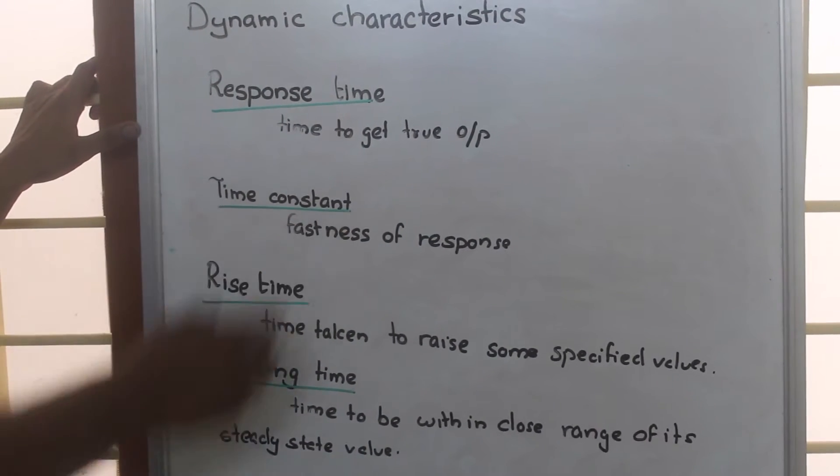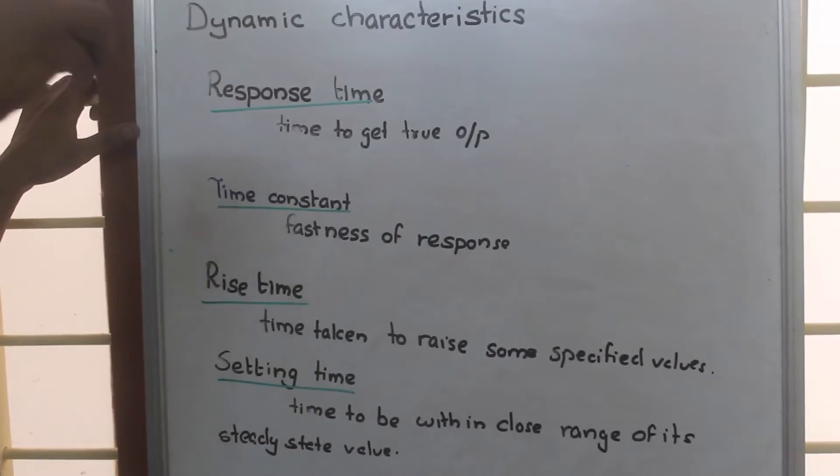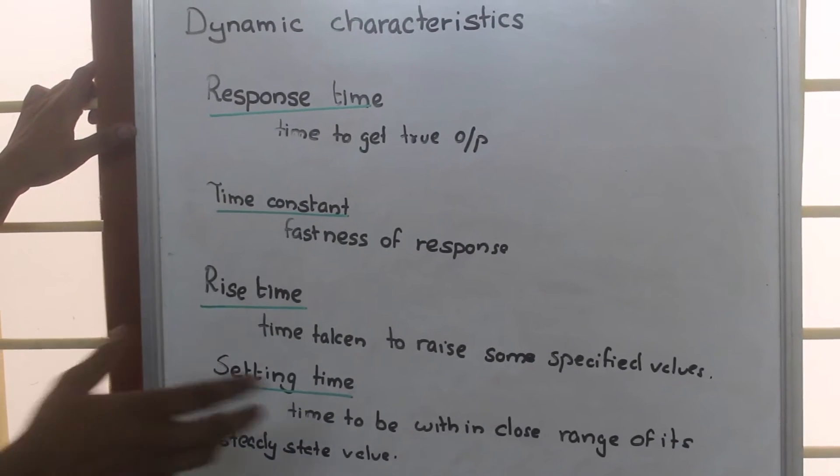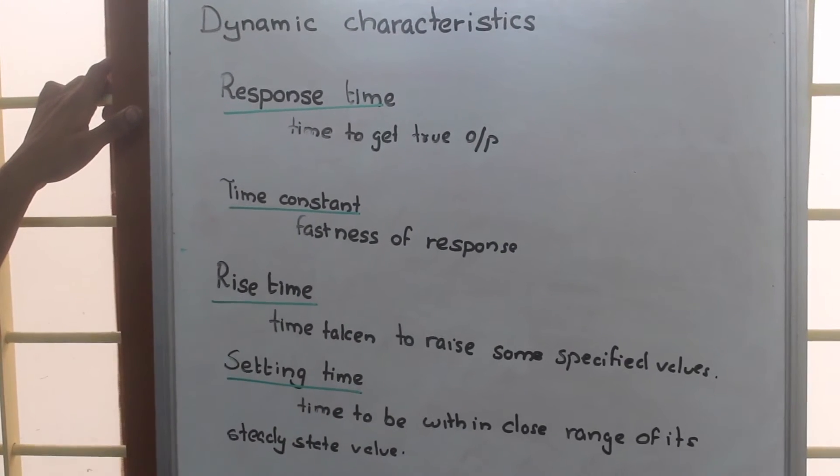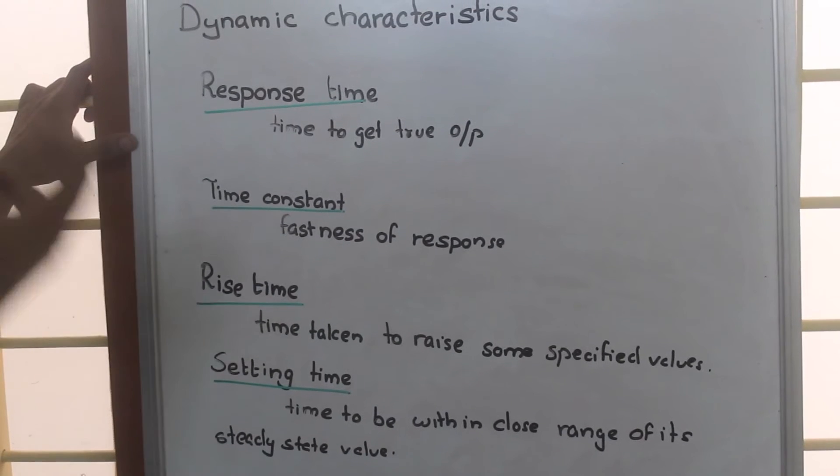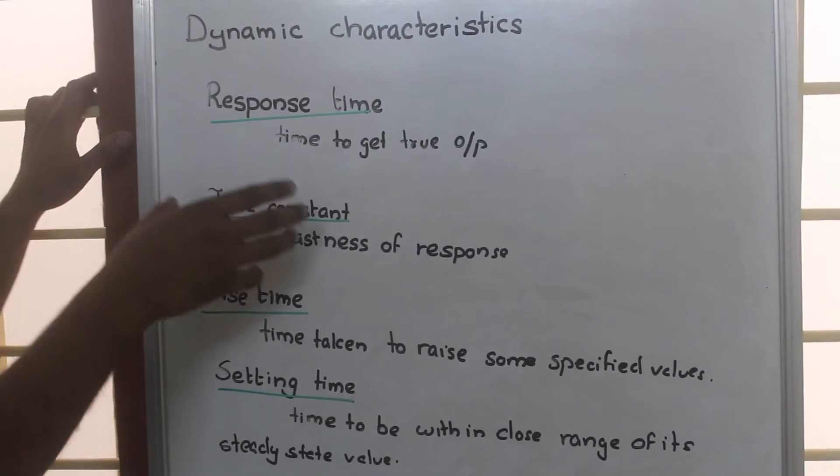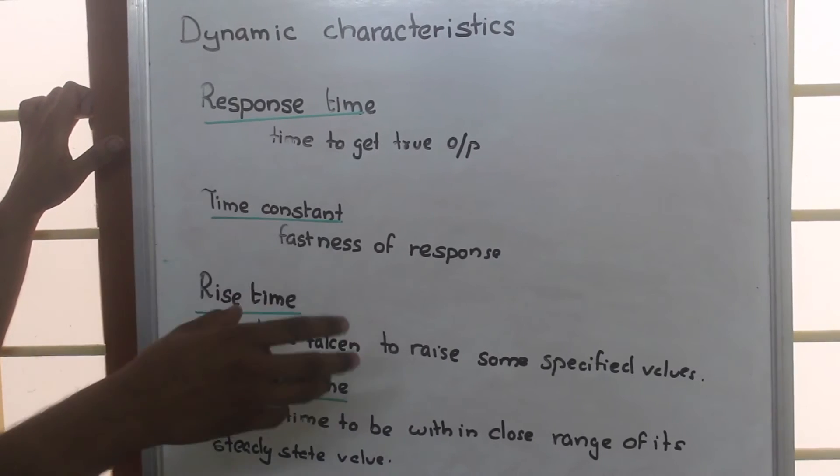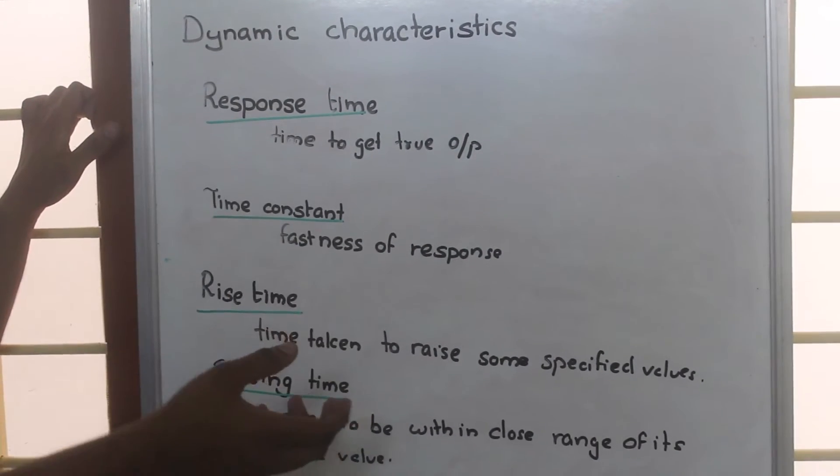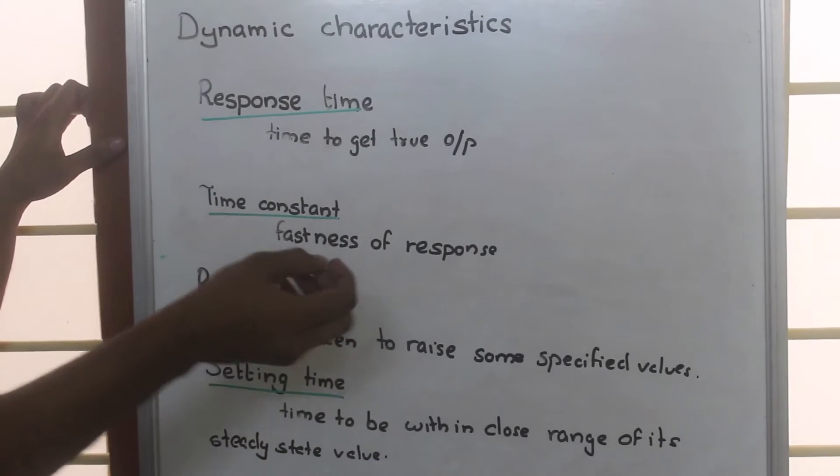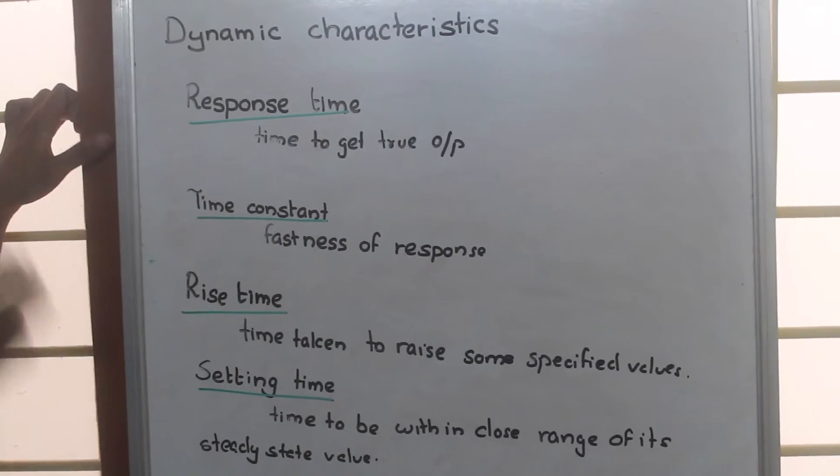Time constant means if we are giving an input, sometimes the sensor will not show any output immediately. It needs some time for response. The fastness of response is measured by time constant.